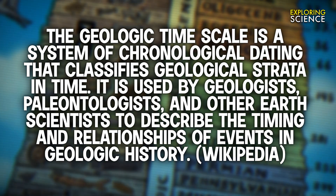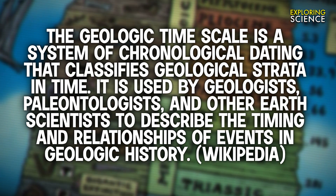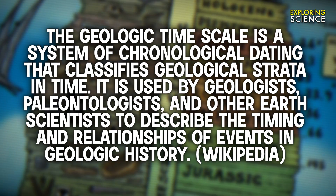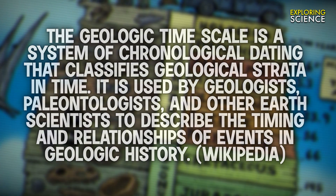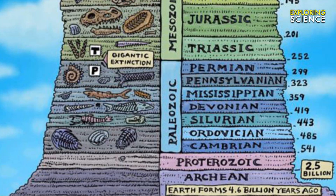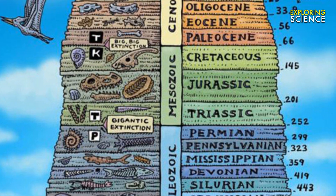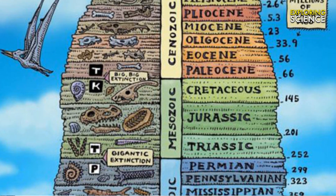It is used by geologists, paleontologists, and other Earth scientists to describe the timing and relationships of events in geologic history. This simply means that the geologic timescale is the calendar for the events in Earth's history. This calendar of events subdivides all time into named units in descending order of duration: eons, eras, periods, epochs, and ages.